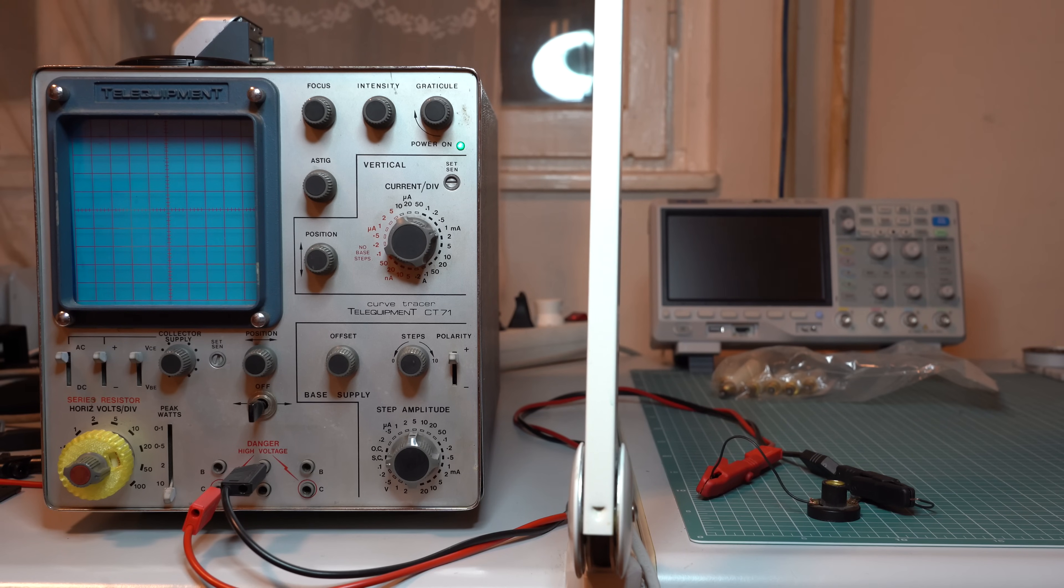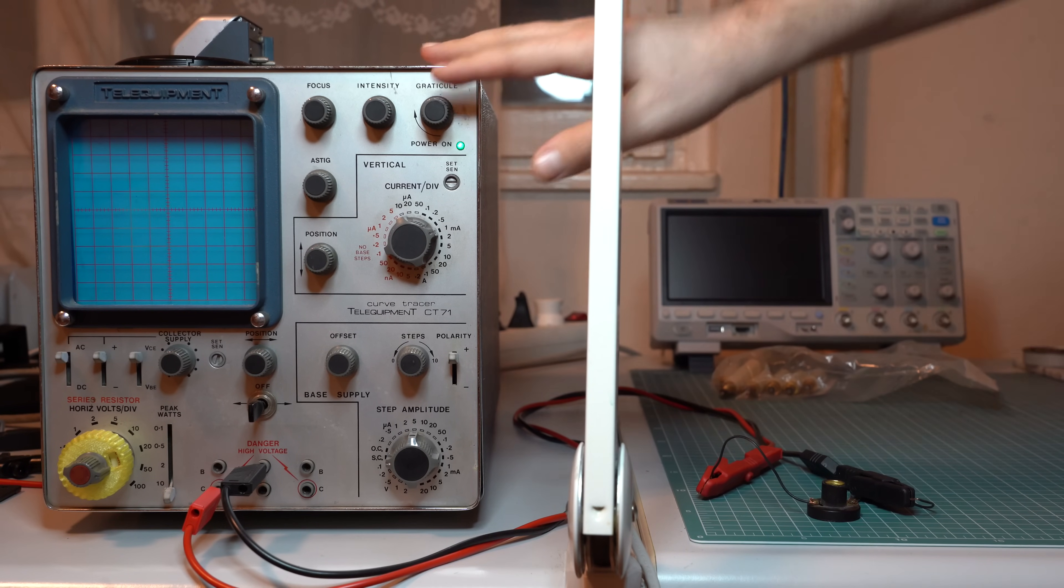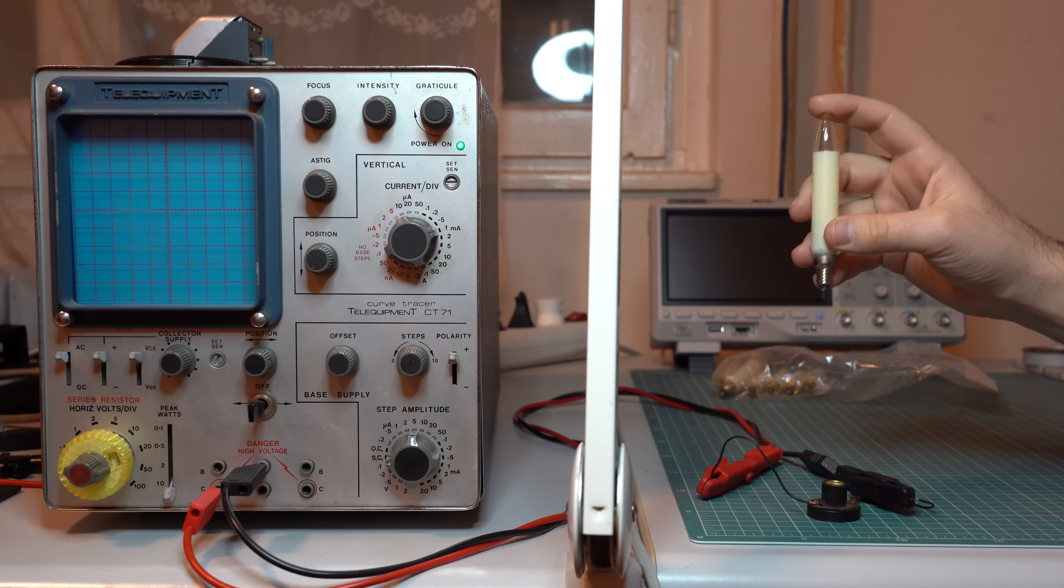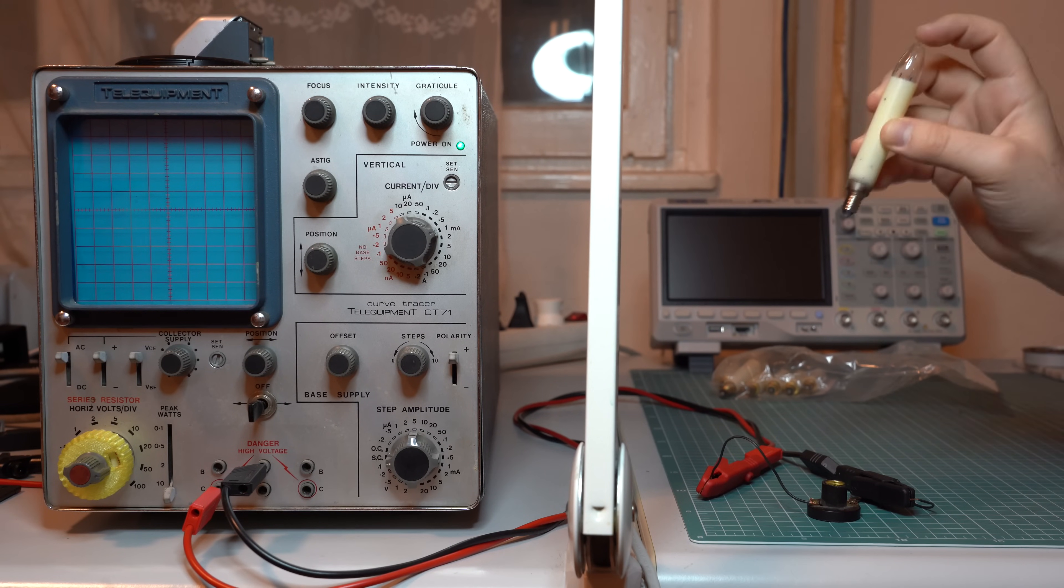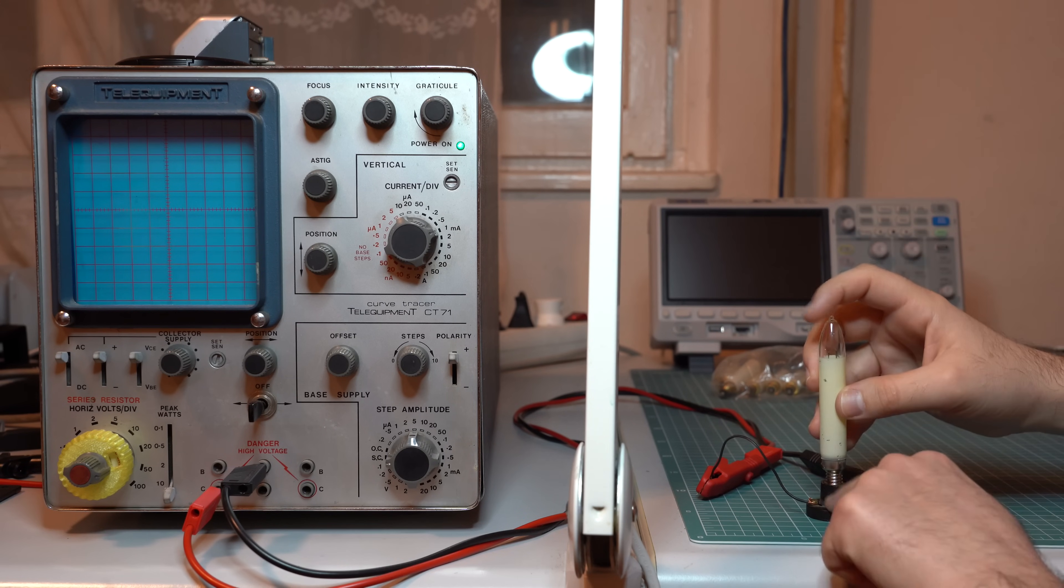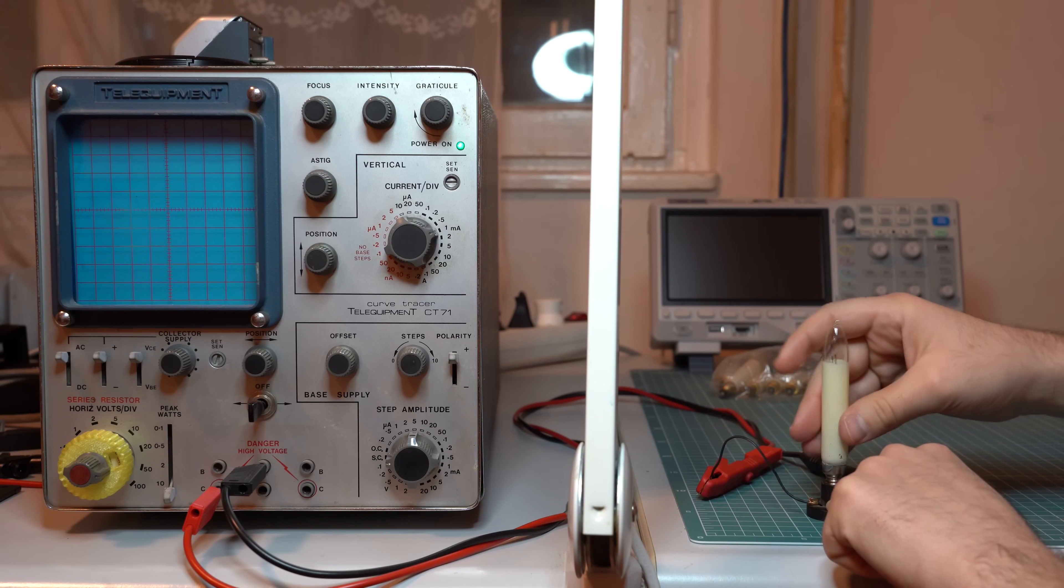To demonstrate this I set up a small experiment. I have here my curve tracer and I want to connect one of these broken lights to it to see what happens when you increase the voltage. And I can do this because I was lucky enough to find one of these lights that failed open circuit. So that means it failed but the bypass mechanism didn't trigger for some reason. So let's just connect it to the curve tracer to see what happens.